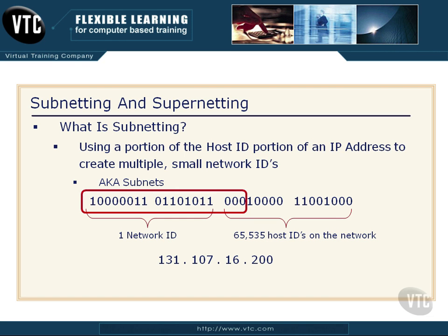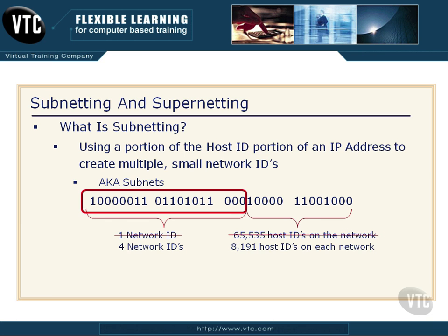What happens if we want more than one network and fewer hosts? Having 65,535 people on one network segment is going to be a problem. So how can we break this up into smaller networks? We simply borrow bits to the right. This used to be our network ID, and now we're going to borrow three bits to the right. When you work this out in binary, everything shifts to the right. We no longer have one network — we now can have four network IDs, and each one has roughly 8,191 hosts per network instead of 65,535. So now we have four networks with 8,191 hosts each. This is much better — we have subnetted our original network.